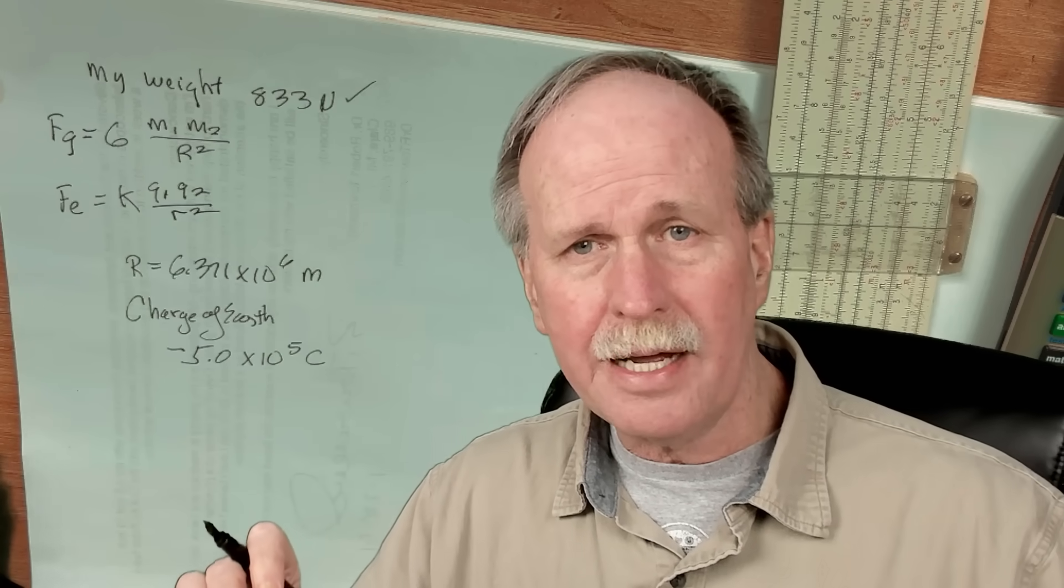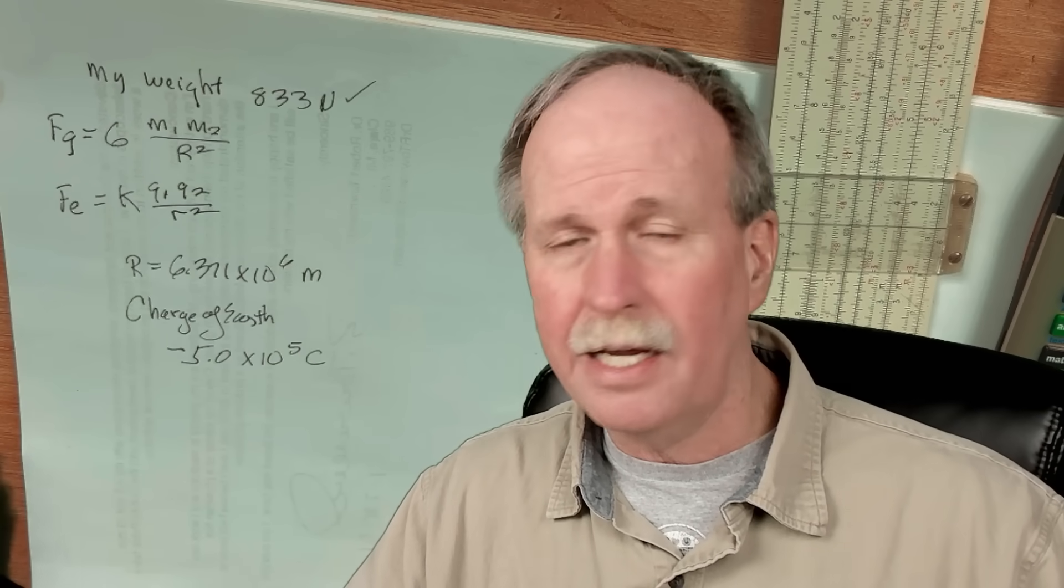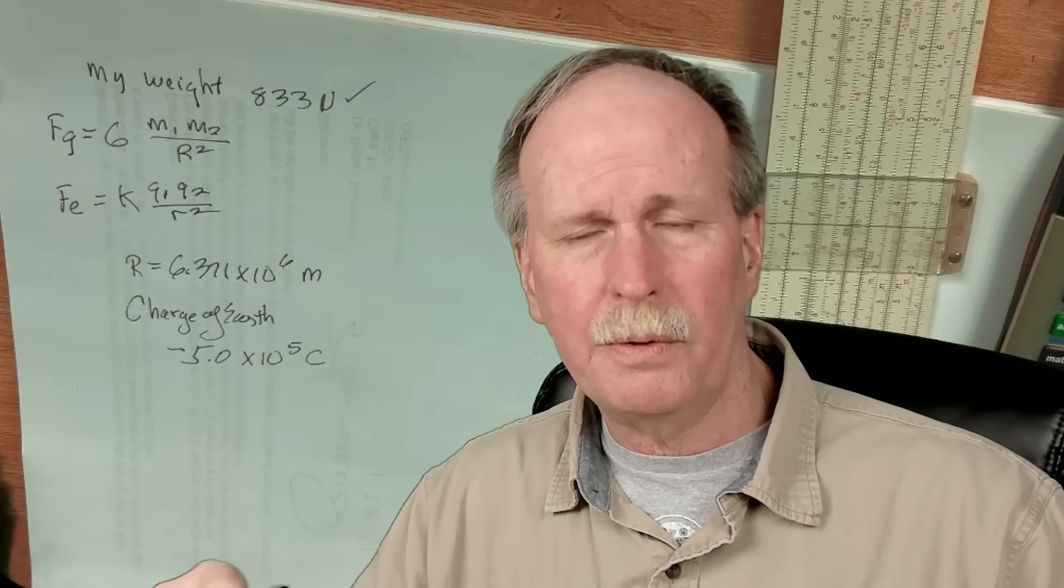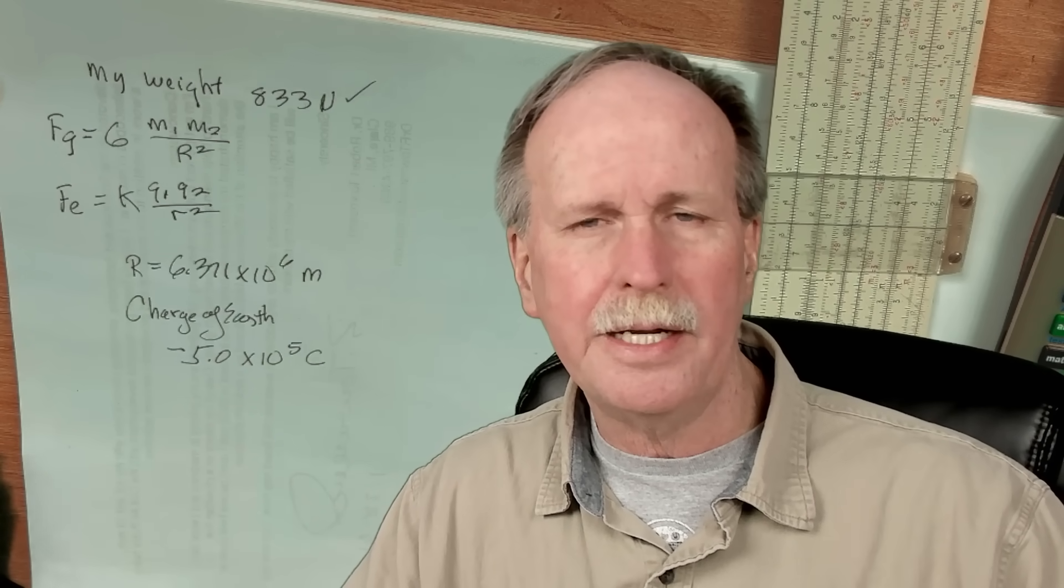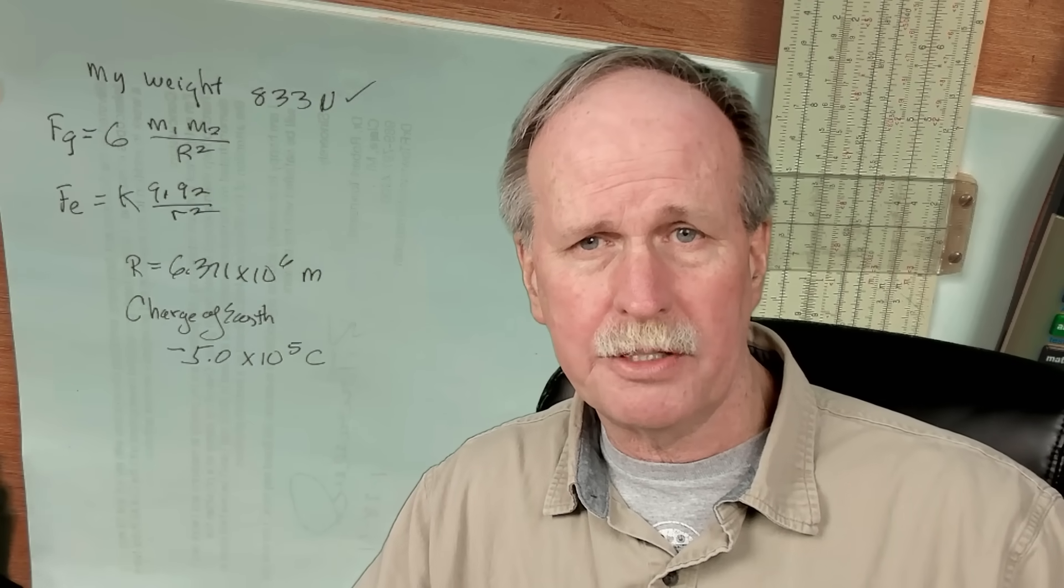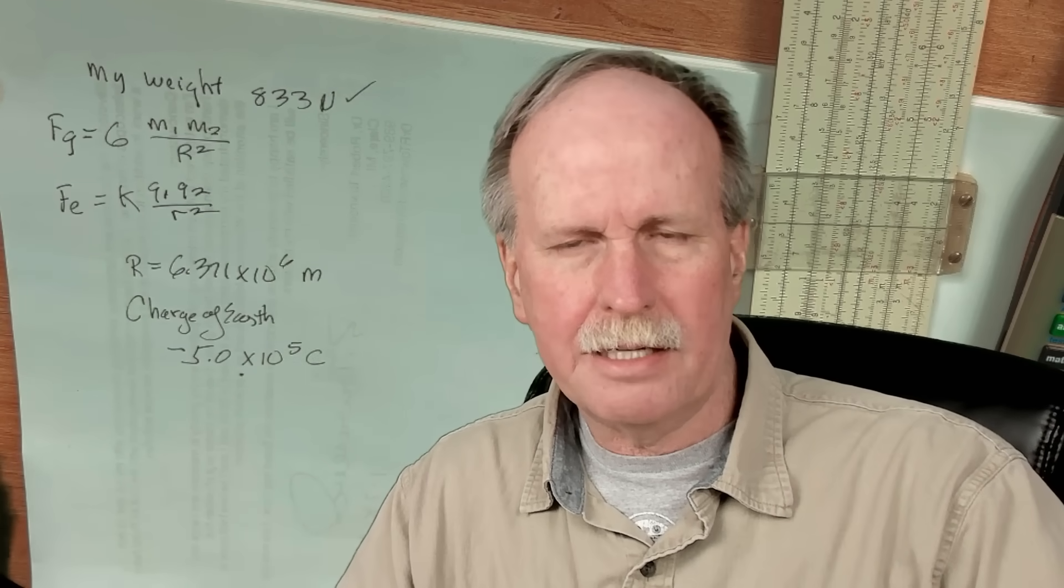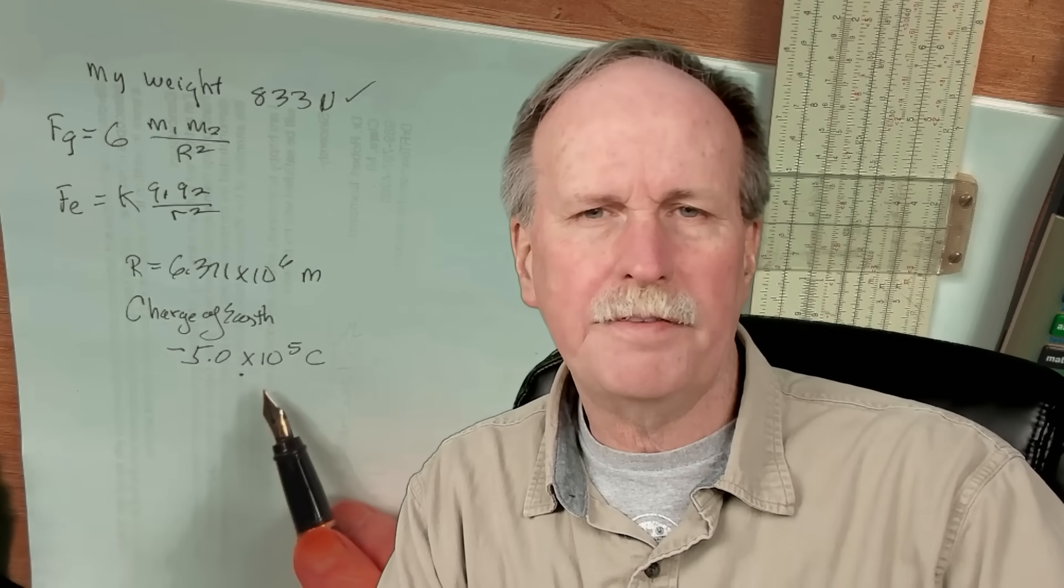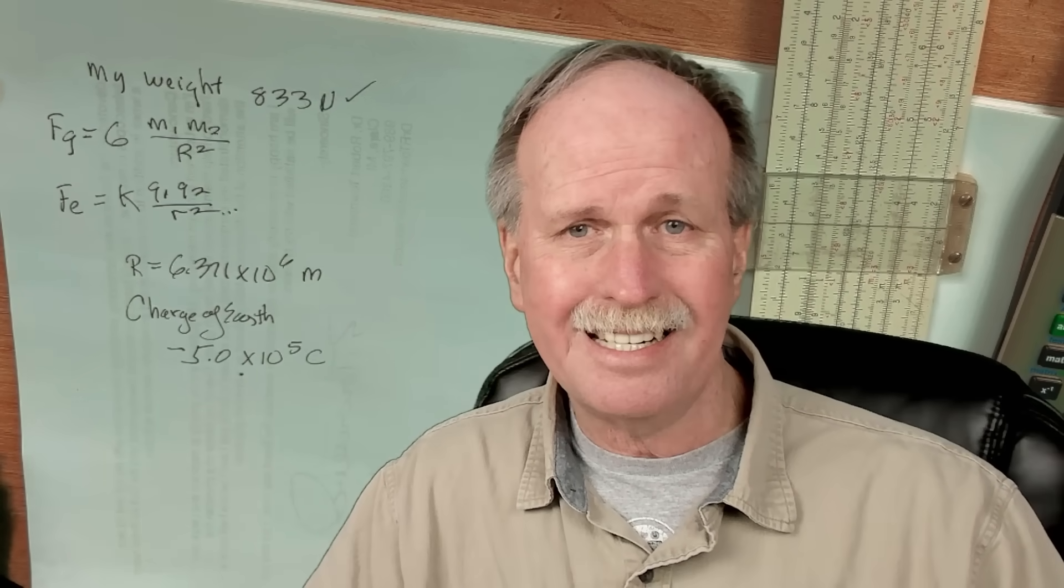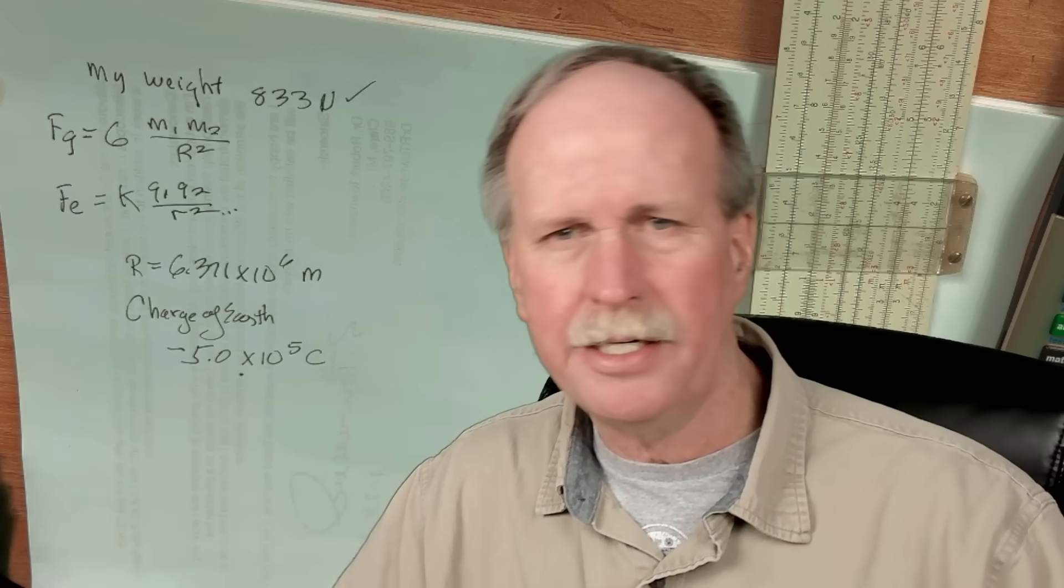Now, you may notice that these are kind of similar, at least in form. However, big G and K are very different, and in physics, this is a very common form of an equation to relate two objects to each other based on the square of the radius between them. Now, the charge of the Earth is about negative 500,000 Coulombs, which is negative 5 times 10 to the 5th. Now, with a little bit of algebraic manipulation over here, I can solve for what the charge on me would have to be. So let's go ahead and do that.